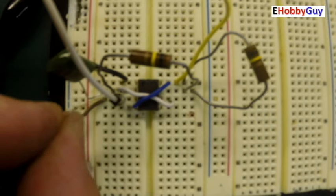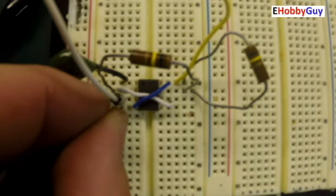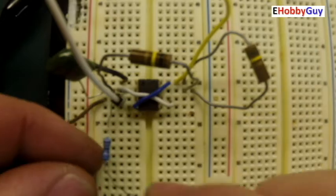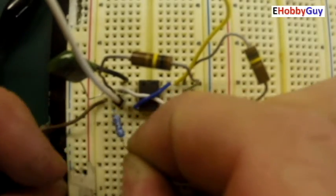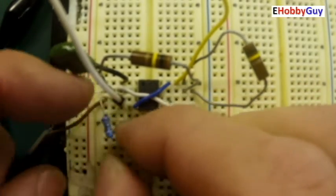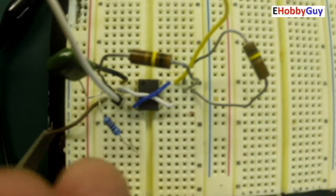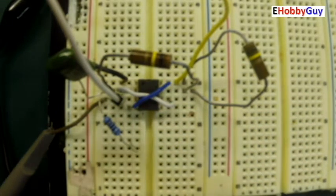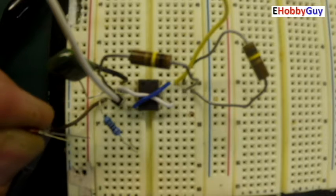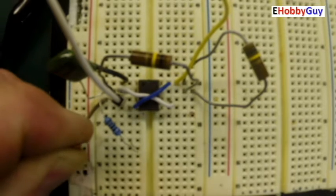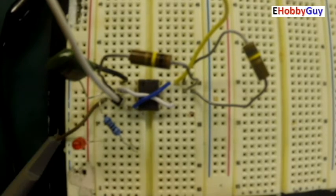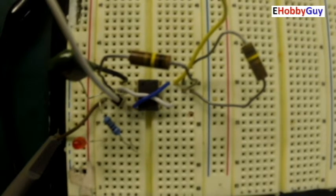Just so we can see the output signal, I'm going to put a 1k resistor to an LED so that we can see it flashing as a visual indicator. LED with the anode to the resistor, cathode to ground. Let's switch it on.